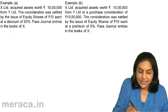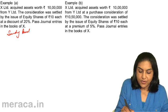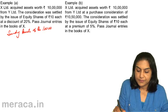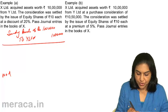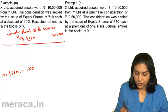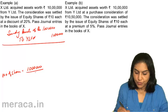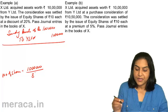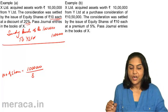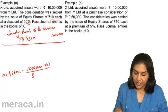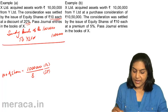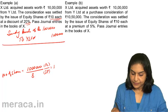Since assets have been acquired: sundry assets account debit 10 lakh, to Y Limited 10 lakh. The issue price per share is rupees 10 each less 20% discount — 20% of 10 is 2 — so 10 minus 2 gives an issue price of rupees 8. Number of shares = purchase consideration divided by issue price per share = 10 lakh divided by 8 per share = 1 lakh 25,000 shares.